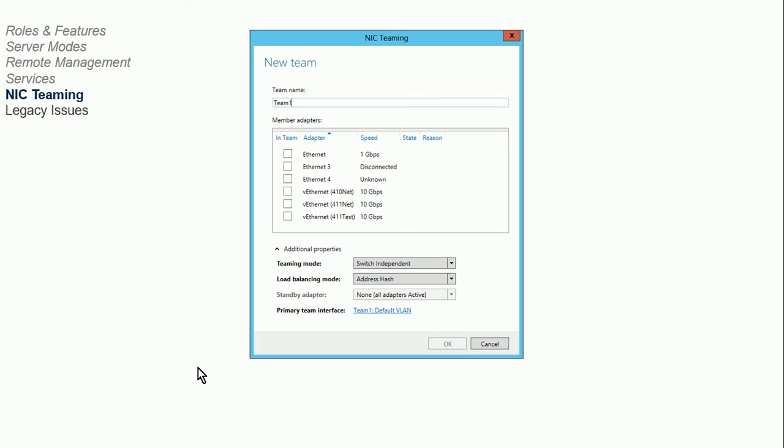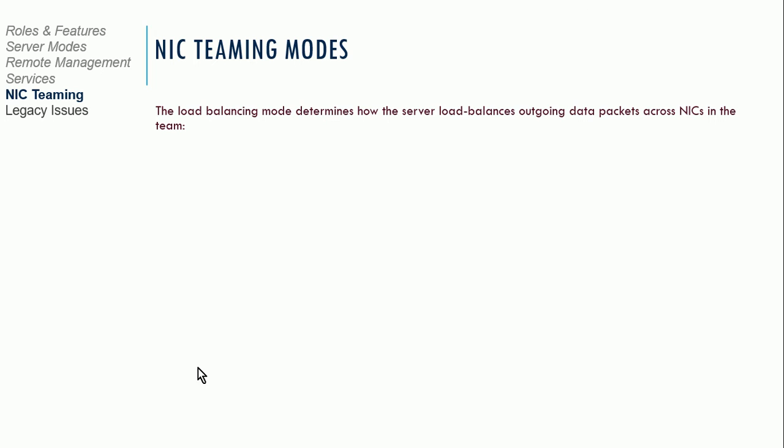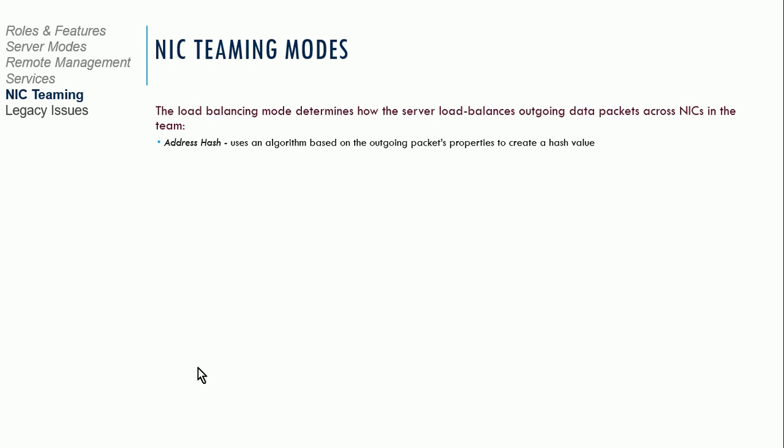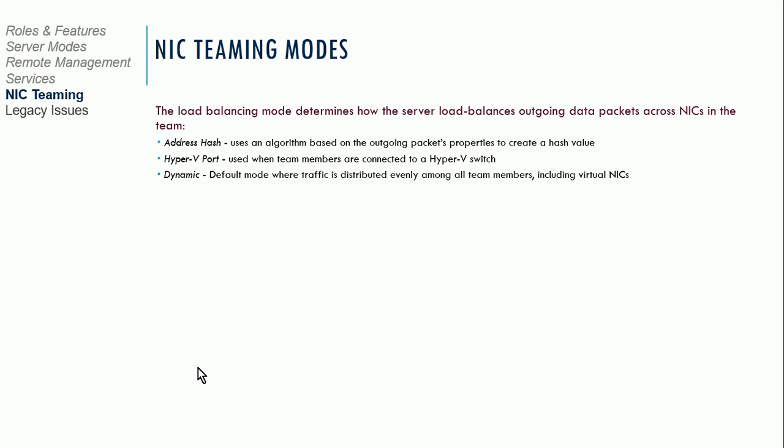This is what our NIC teaming interface looks like — this is where you select your NICs and indicate the mode, whether teaming or load balancing. For load balancing modes, you have address hash, which uses an algorithm based on outgoing packet properties to create a hash value. There's Hyper-V port, used when team members are connected to a Hyper-V switch — useful if you're configuring a Windows Server VM in Hyper-V. And then there's dynamic, which is the default mode where traffic is distributed evenly among all team members, and is probably the most common way to configure team NICs.